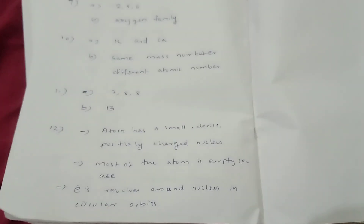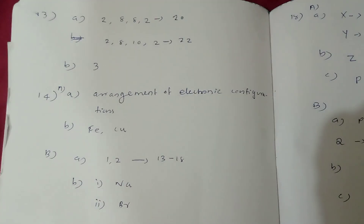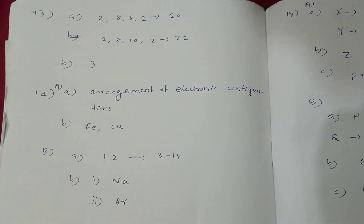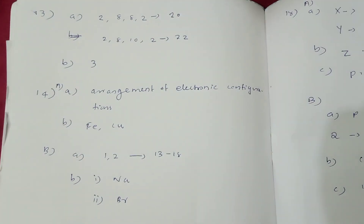Question number 12: Atom has a small, dense, positively charged nucleus. Most of the atom is empty space. Electrons revolve around the nucleus in circular orbits.